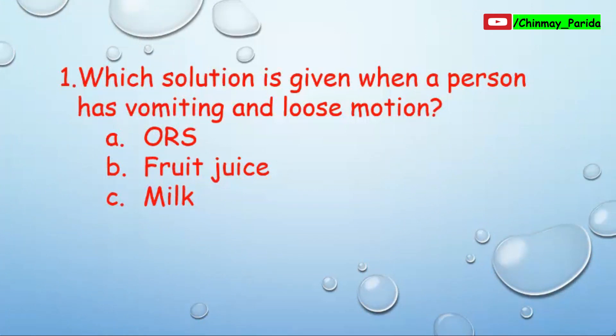Which solution is given when a person has vomiting and loose motion? Option A: ORS (Oral Rehydration Solution), Option B: Fruit juice, Option C: Milk. The answer is Option A — ORS, Oral Rehydration Solution. Due to dehydration we feel like vomiting and have loose motion.